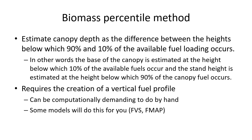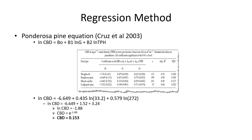The biomass percentile method can be calculated manually in Excel or R, or directly in FVS, which computes it automatically. Cruz also has a regression approach to calculate canopy bulk density directly — plug in trees per hectare and basal area with stand-specific parameters and it outputs bulk density.